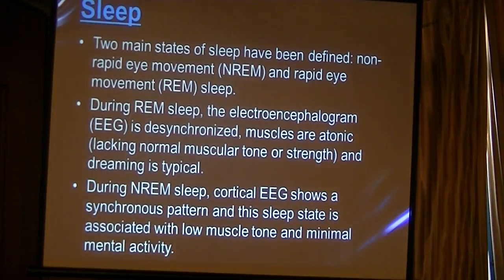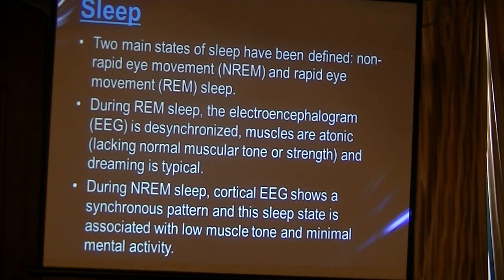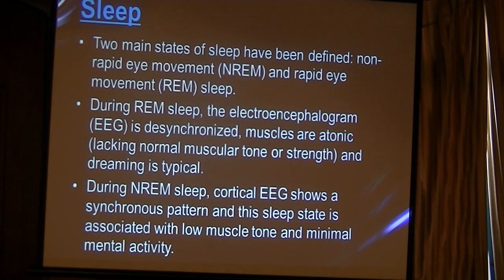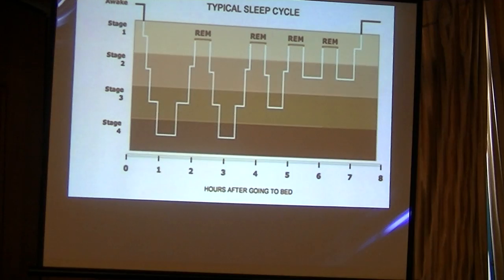There are two types of sleep: non-rapid eye movement (non-REM) sleep and rapid eye movement (REM) sleep. In REM sleep, the brain network is synchronized and muscles are atonic. In non-REM sleep, the EEG shows a synchronized pattern with low muscle tone and minimal REM activity.